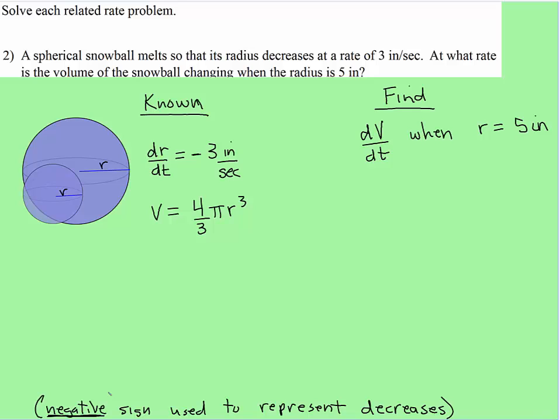Okay, so just want to give you that heads up. So here we have a spherical snowball melt so that its radius decreases at a rate of 3 inches per second. At what rate is the volume of the snowball changing when the radius is 5 inches?